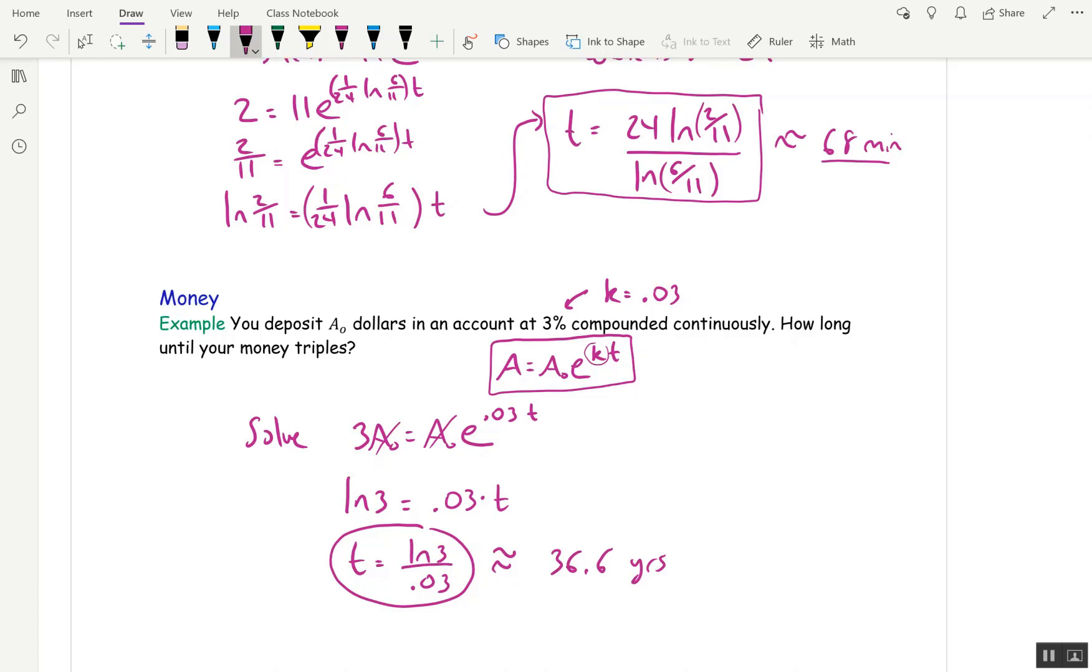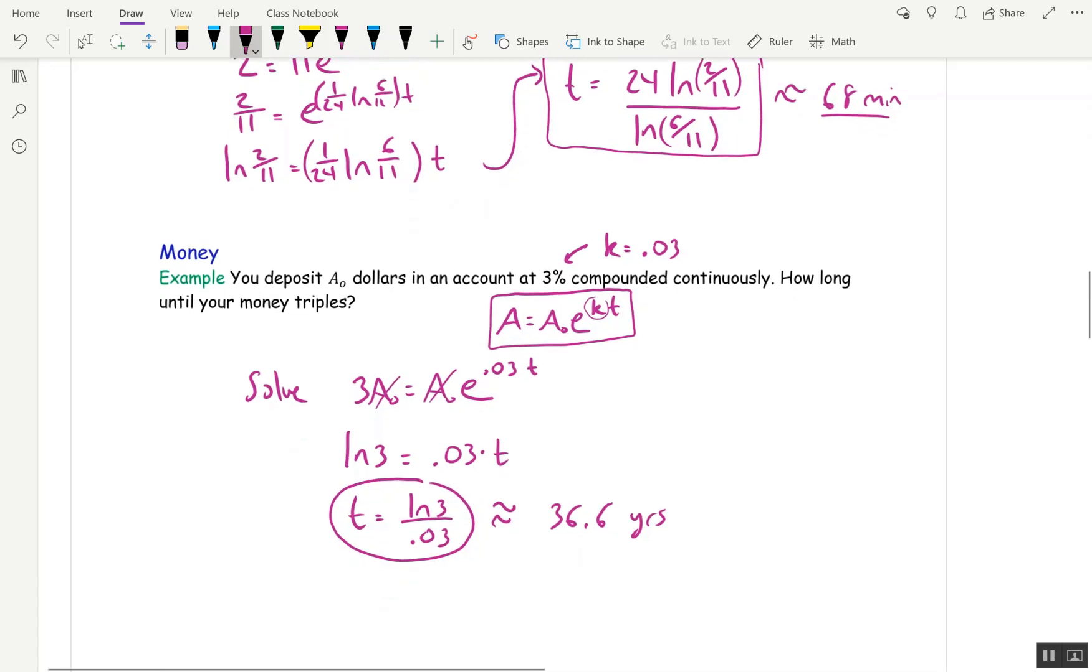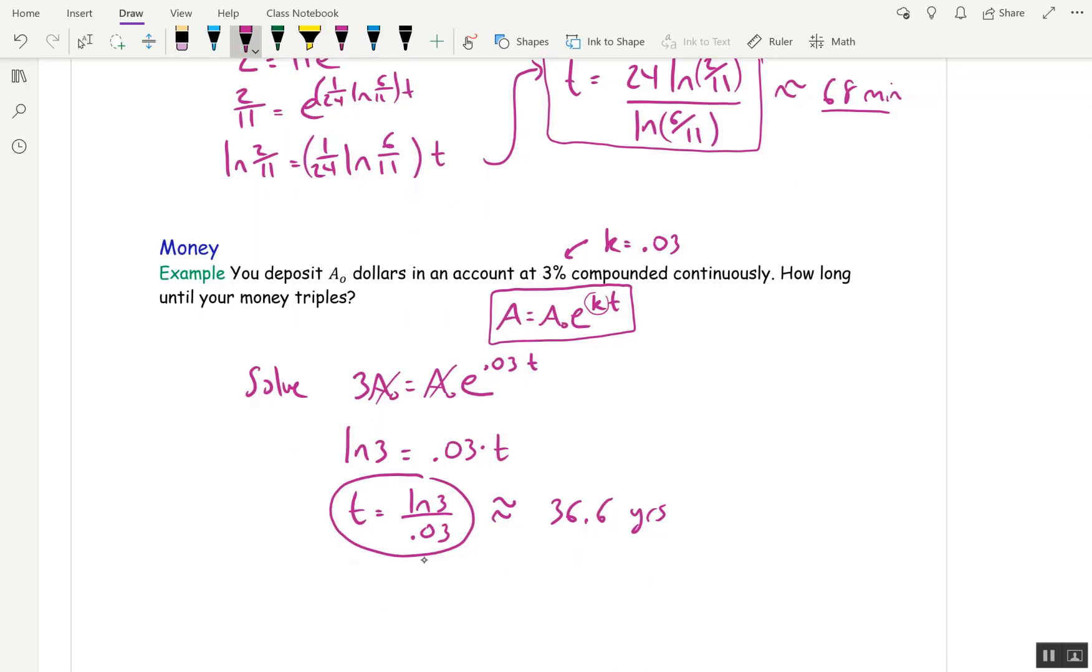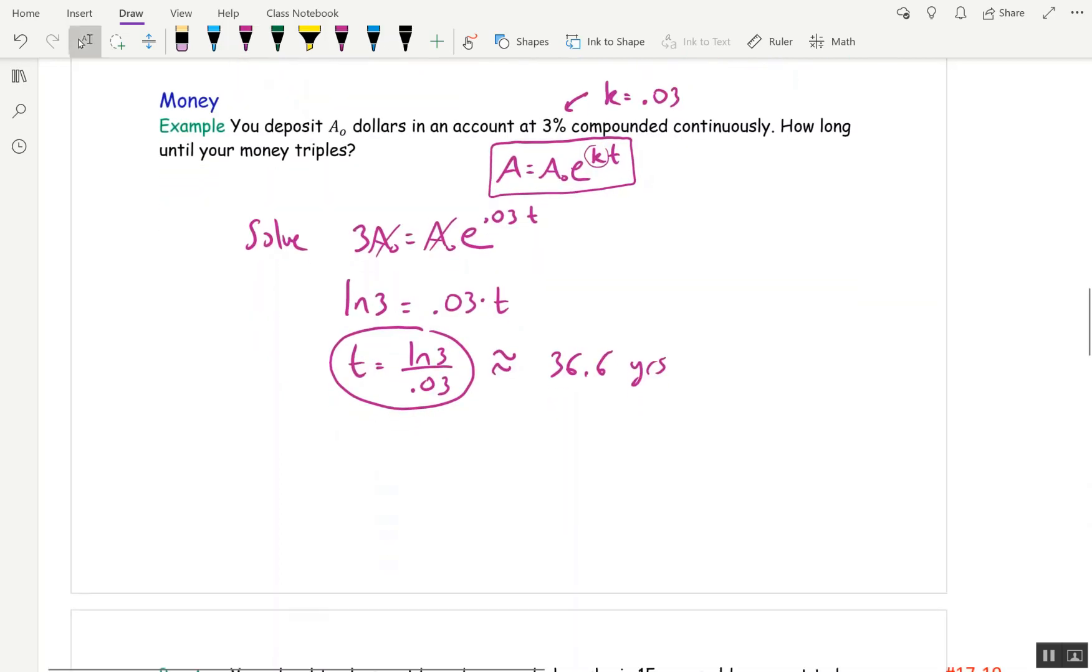So it's a long time to triple your money. What I want to point out to you though, is for tripling or doubling, the answer is independent of how much you started with. The A₀s canceled in the beginning. So if you start with $5, then in 36 years, you'll have $15. Okay. Which is sad, but if you start with a million dollars in 36 years, you'll have 3 million. So it's better. The more you can invest initially is better for you.